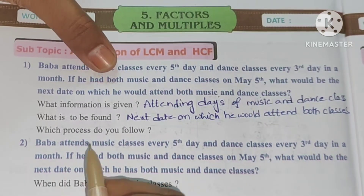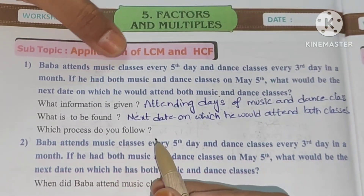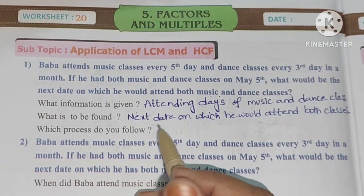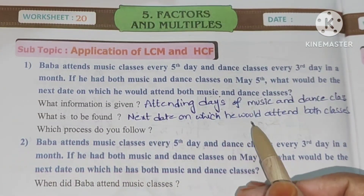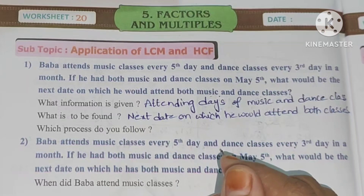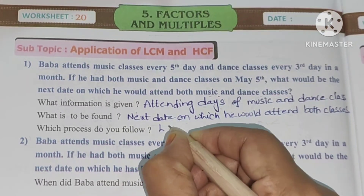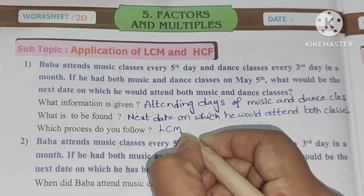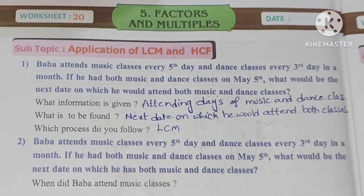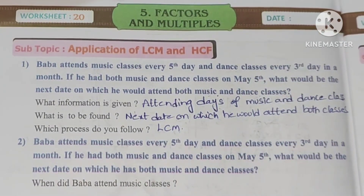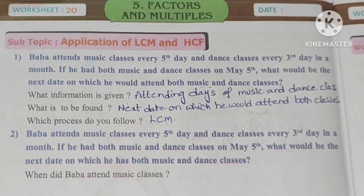Which process do you follow? We need to find the LCM — least common multiple. We need to find out the LCM.